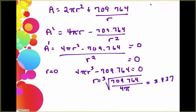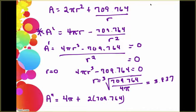So I can now look at the second derivative and get that A double prime is 4 pi plus 2 times 709.764 over r cubed. But I can see that if I put in 3.837 for r, that's going to give me a positive answer, which tells me that that critical point is your minimum.